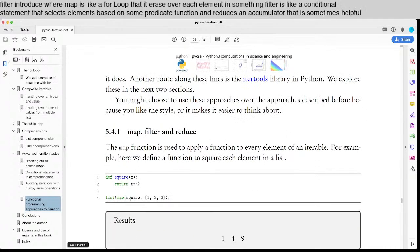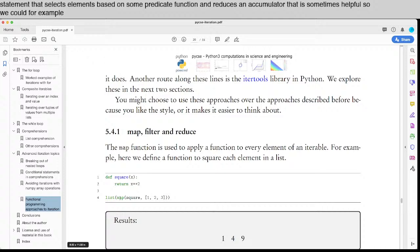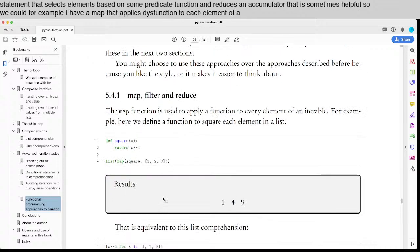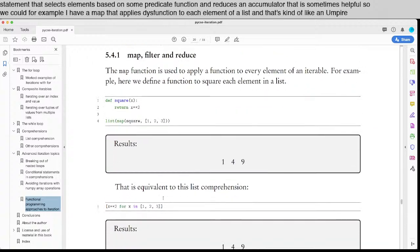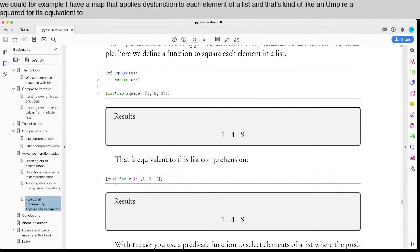So we could, for example, have a map that applies this function to each element of a list. And that's kind of like a NumPy array squared, or it's equivalent to this list comprehension.